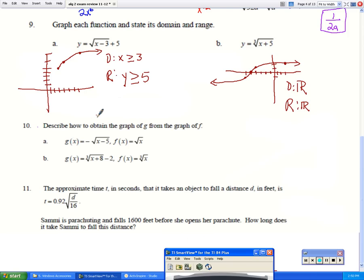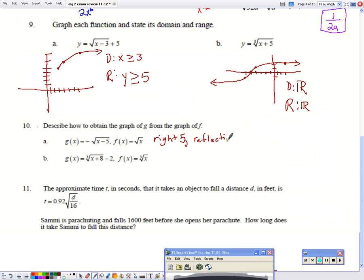Number 10. Describe how to obtain the graph of G from the graph of F. Well, for A, F is just a regular square root function. I have this minus 5 inside. So I know that G is going to be right 5. And there's a negative outside the graph, which means we are going to have a reflection over the x-axis.